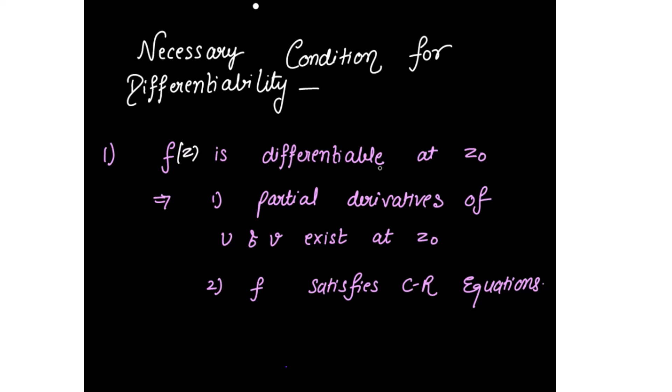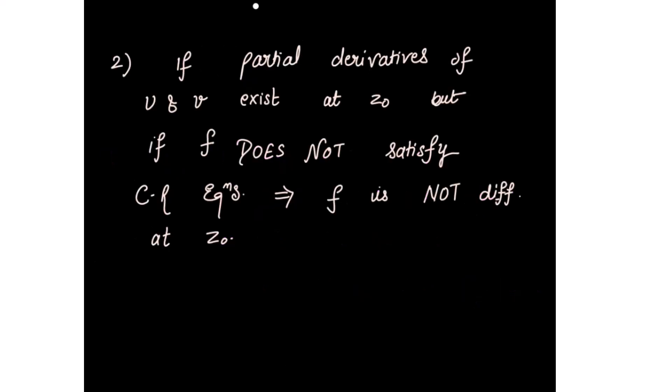First, f(z) is differentiable at z₀ implies partial derivatives of u and v exist at z₀. Taking f(z) = u + iv, for f(z) to be differentiable, partial derivatives of u and v must exist at z₀. Second, the function must satisfy the Cauchy-Riemann (CR) equations. If partial derivatives of u and v exist but f does not satisfy the CR equations, then the function is not differentiable.